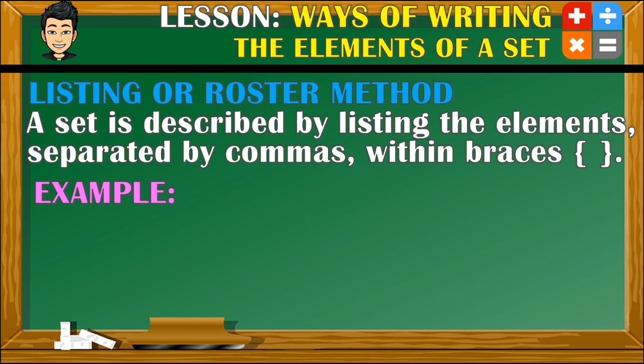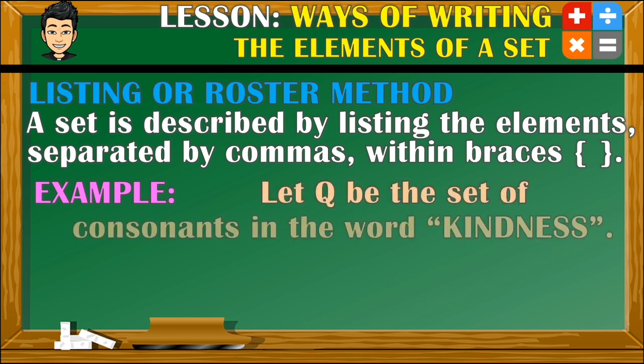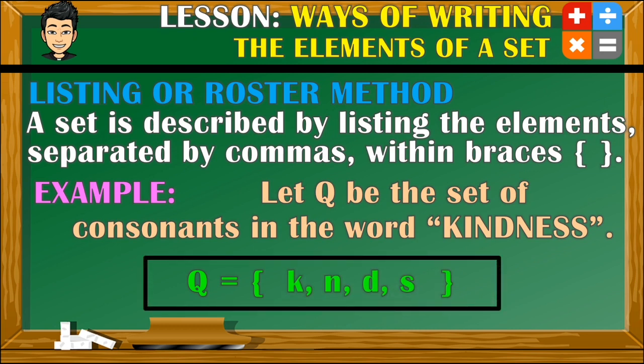Another example: let Q be the set of consonants in the word 'kindness.' So the elements of this set will be listed down just like this. Take note that similar elements are only written once, and the arrangement of the elements does not matter.